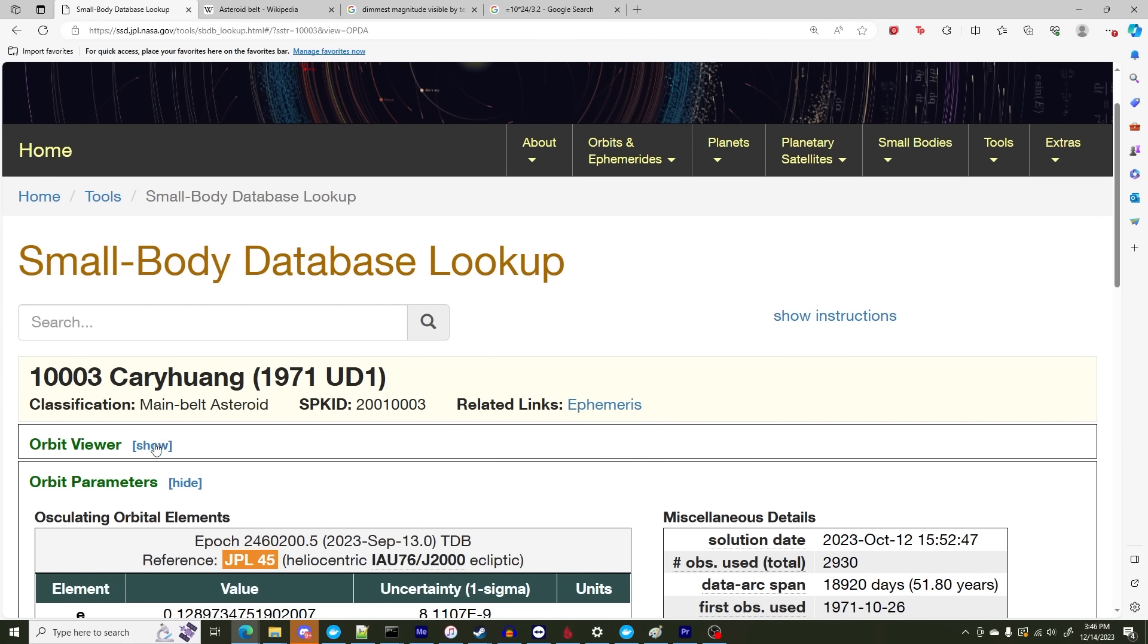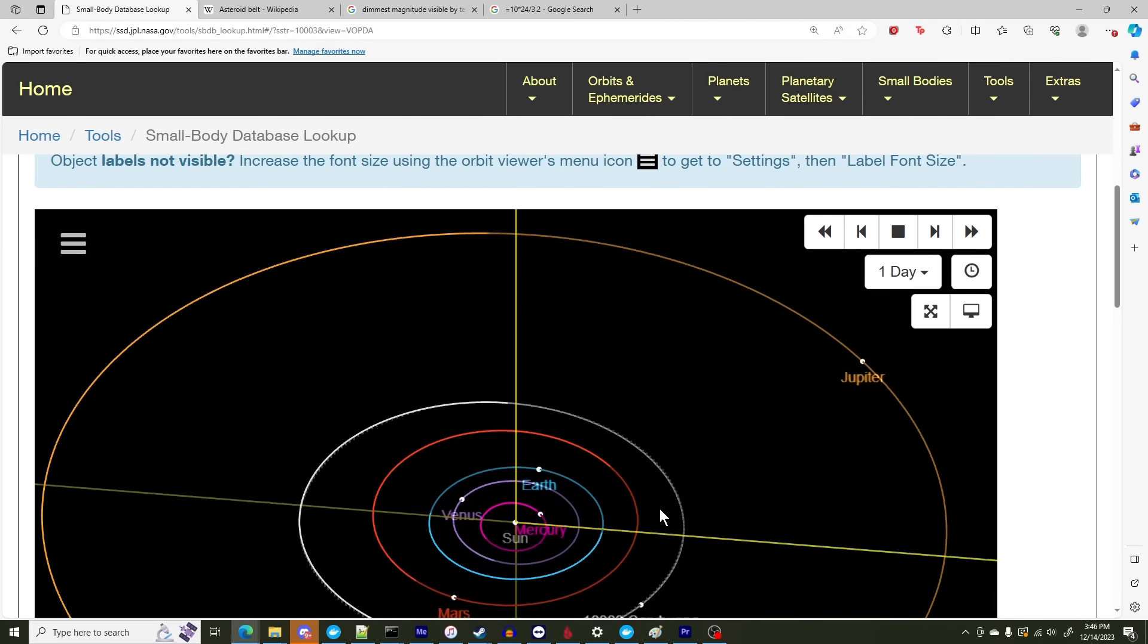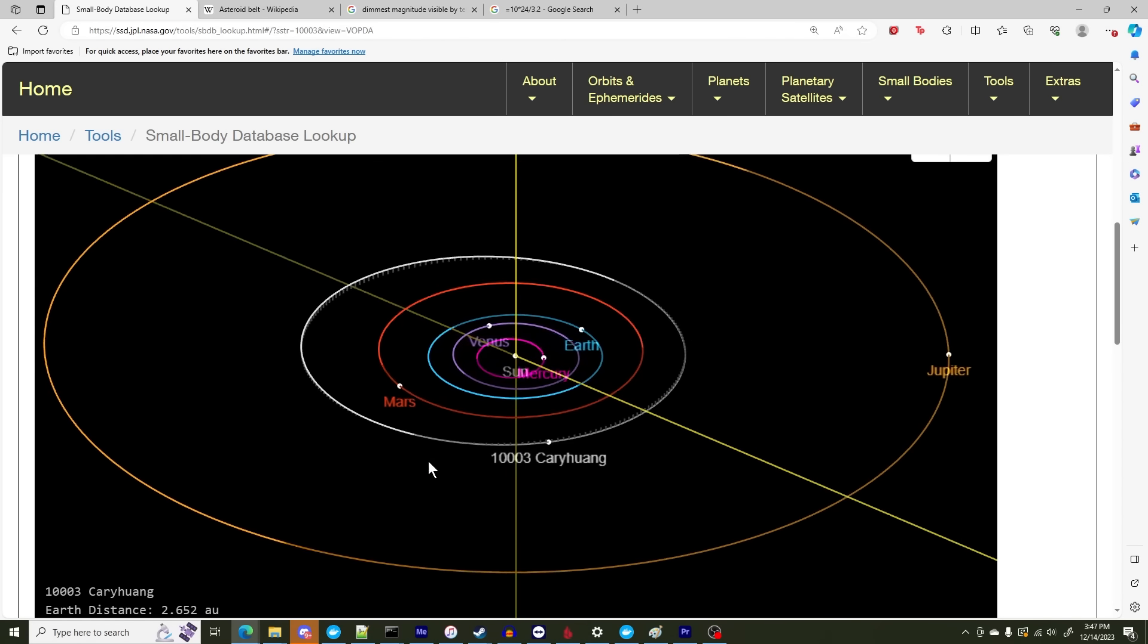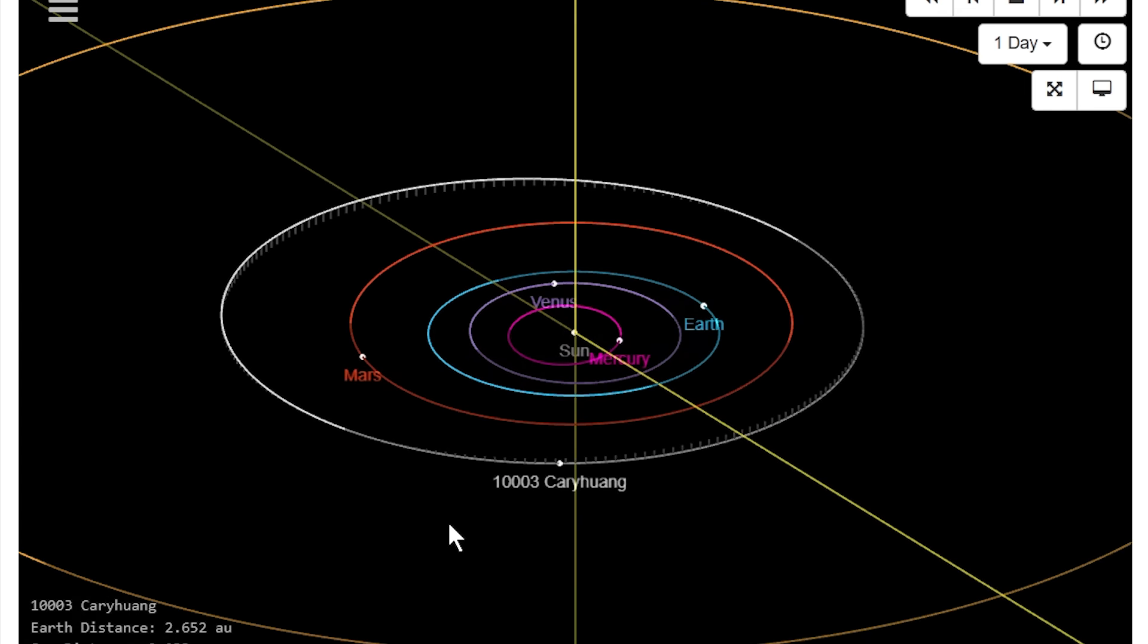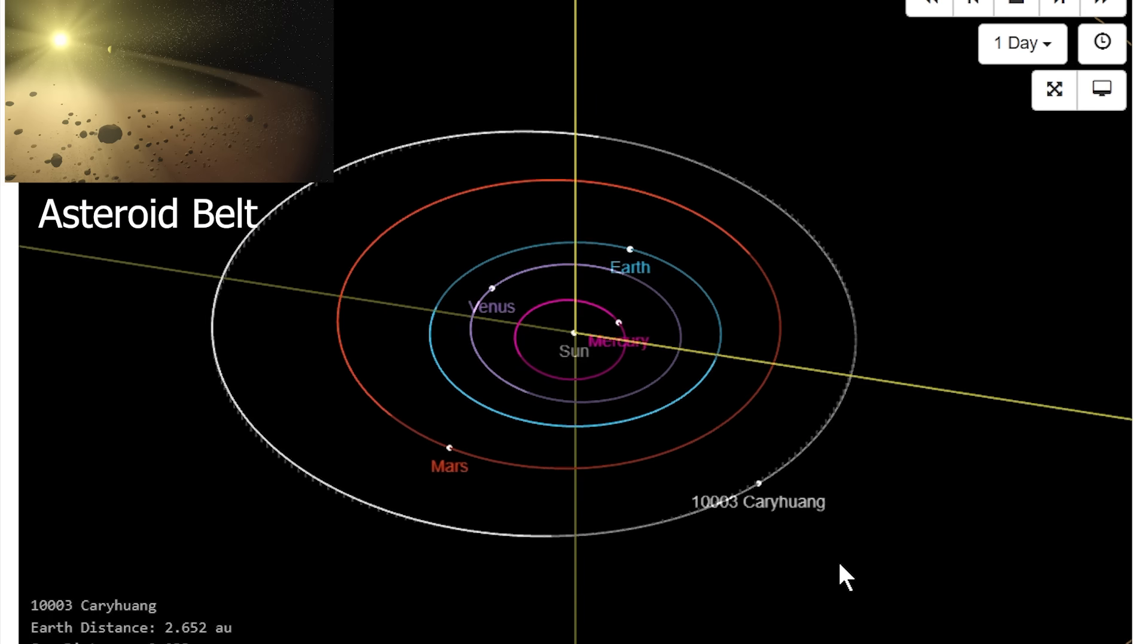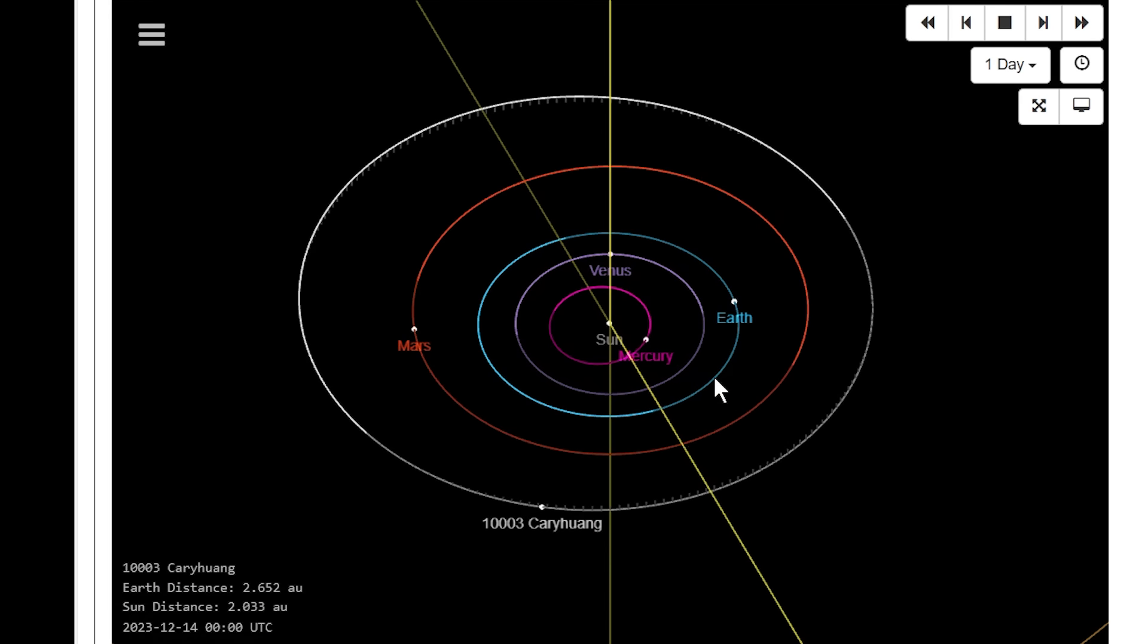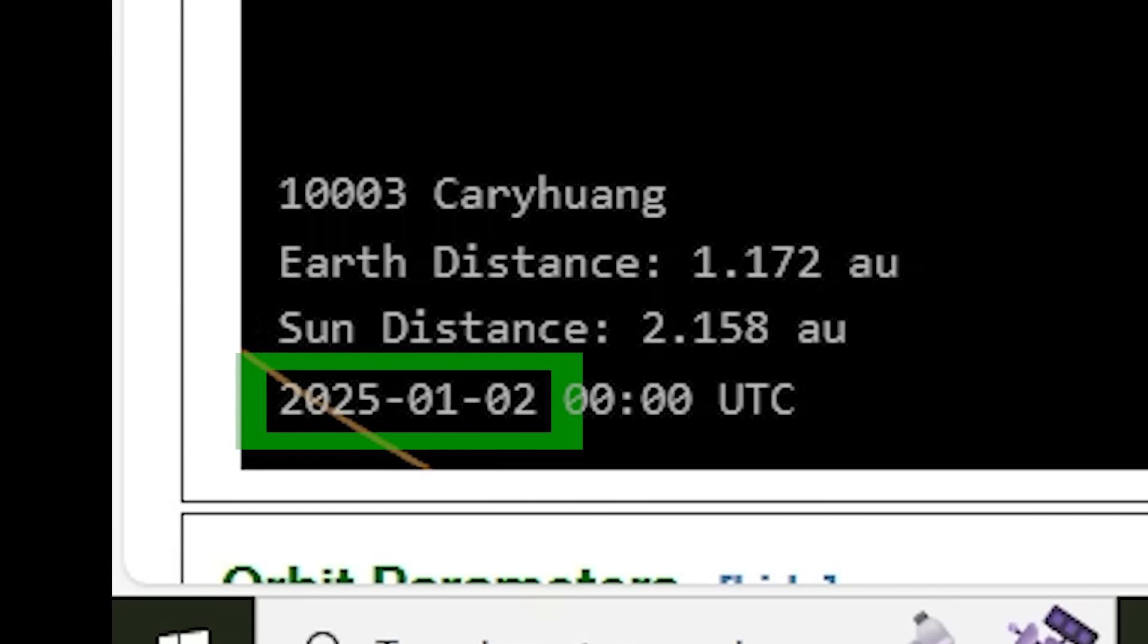But the other cool thing that this website includes is an orbit viewer. So, we can see where Kari Huang is orbiting amongst the stars or amongst the planets. So, as you can see, Earth's orbit is in blue, Mars's orbit is in red, and Jupiter's orbit is in orange, and this white orbit is Kari Huang, which is among the inner edge of the asteroid belt. As you can see, right now, Kari Huang is pretty far from Earth, and that distance is going to increase as they orbit further, which we can see by clicking play. And at a certain point, it reaches max distance right about there. But then, let's see when they reach the nearest approach. Somewhere around here. So, this will be in 2025, January 2nd. So, that's about a year away.